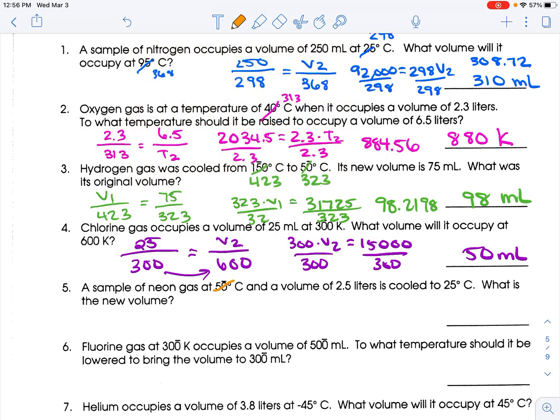50 plus 273 is, oh, that was just in the last one. 25 plus 273, 298. All right, so we're looking for the V2. So it starts at 2.5, and we're at 323. We're looking for the V2, and we're at 298. So 298 times 2.5 gives me 745 equals 323 times V2. Divide both sides by 323, and you get 2.3065. Looks like two sig figs again, so 2.3, and that's liters.